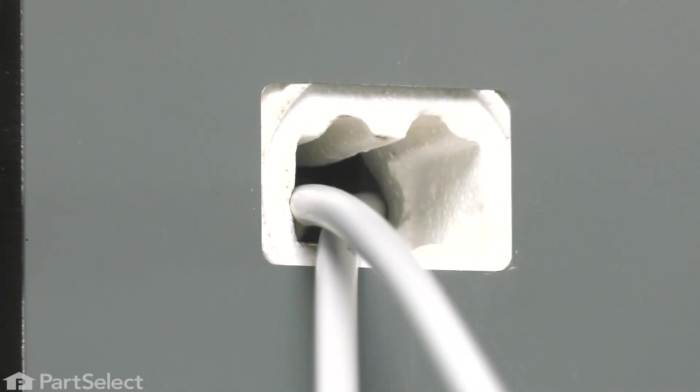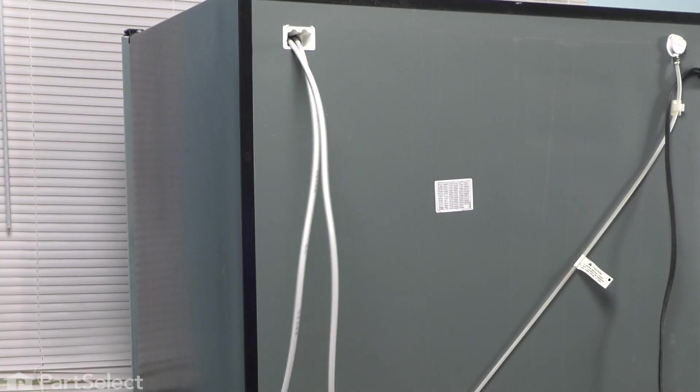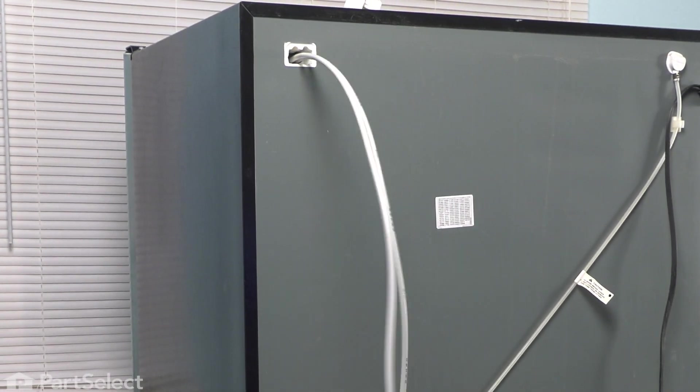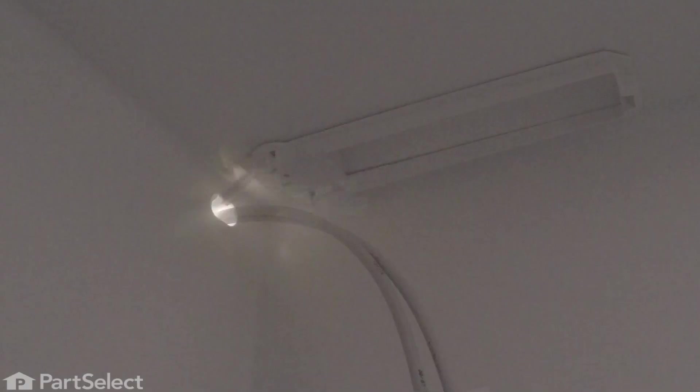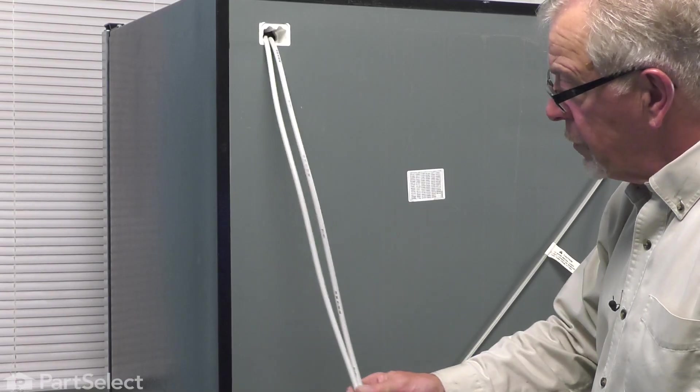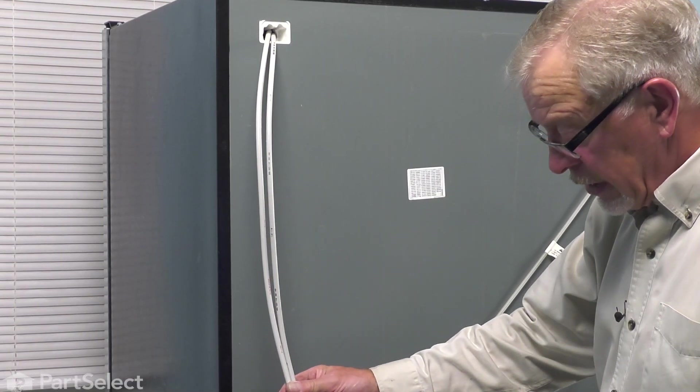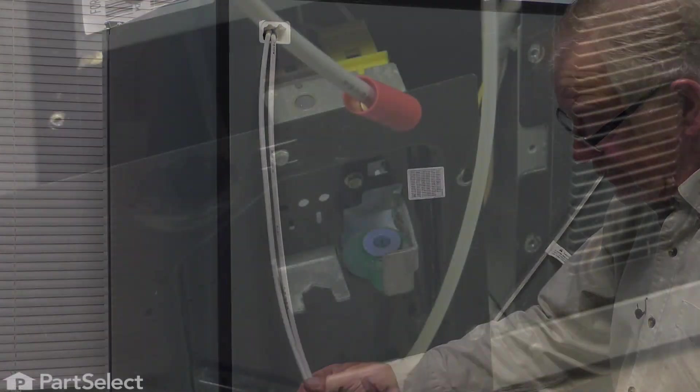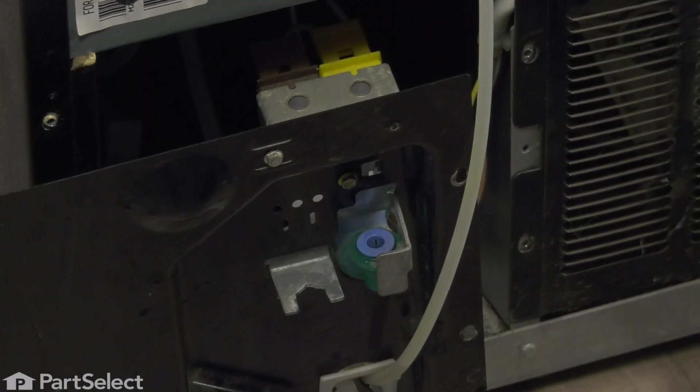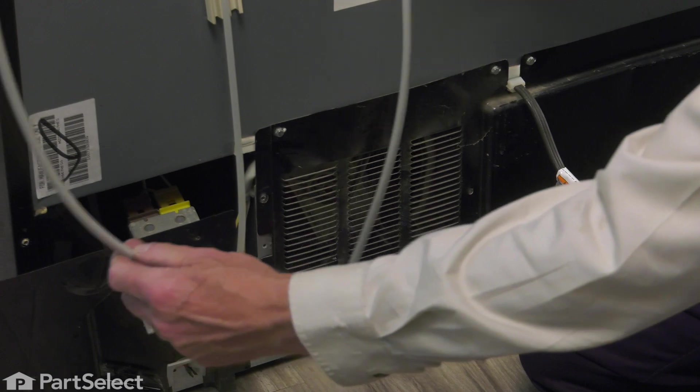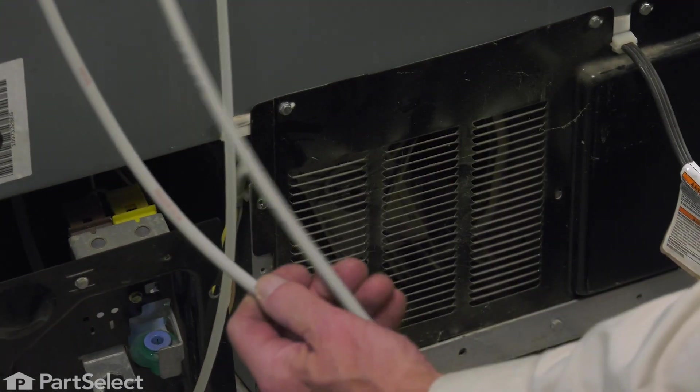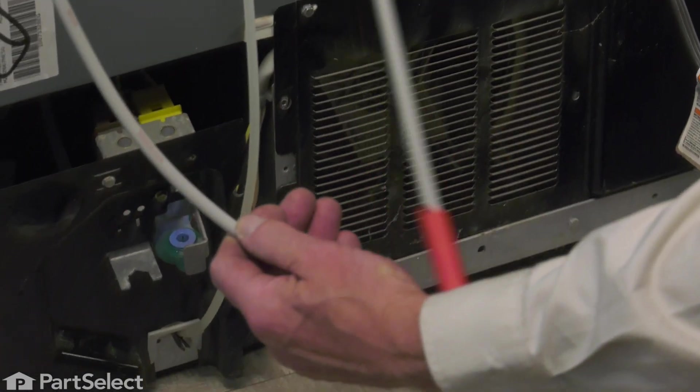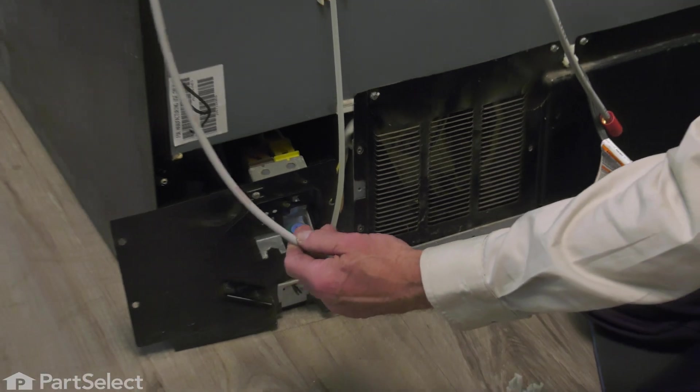We'll go ahead and reconnect those to the water valves. We'll make sure that we don't get them twisted. We'll keep the one with the brass fitting to the right as we face it from the back.